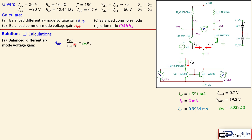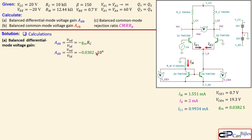For the balanced differential mode voltage gain, the formula is VOD/VID = −gm × RC, where VOD is the voltage between the two collectors and VID is the differential input voltage. Substituting gm = 38.2 mS and RC = 10 kΩ gives a balanced differential mode gain of −3.82 (actually −38.2 — approximately −382 when expressed as a scalar from dB in later simulation).